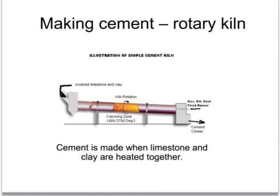The cement which comes out the other end is in the form of lumps called clinker. It is then crushed and powdered before it's sold as cement powder. So cement is made when limestone and clay are heated together.